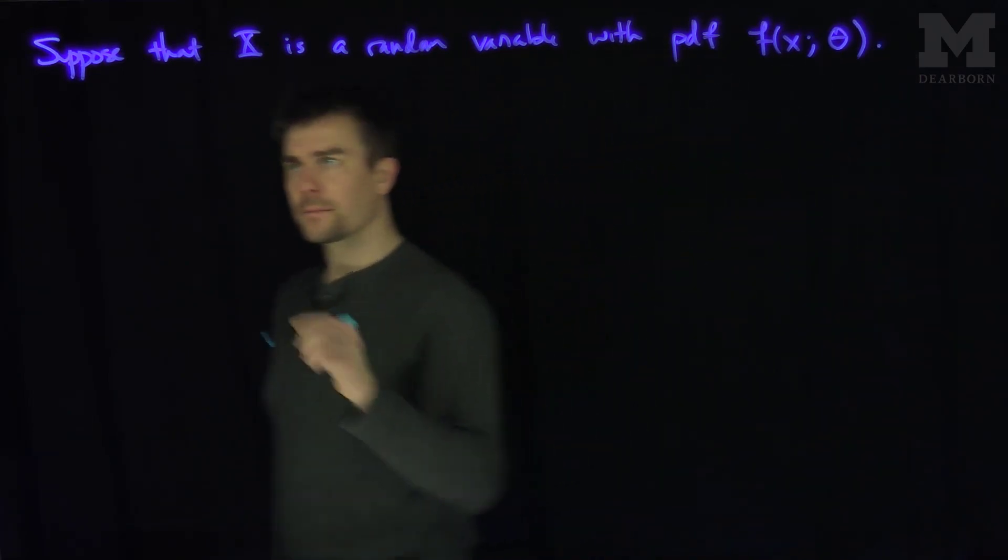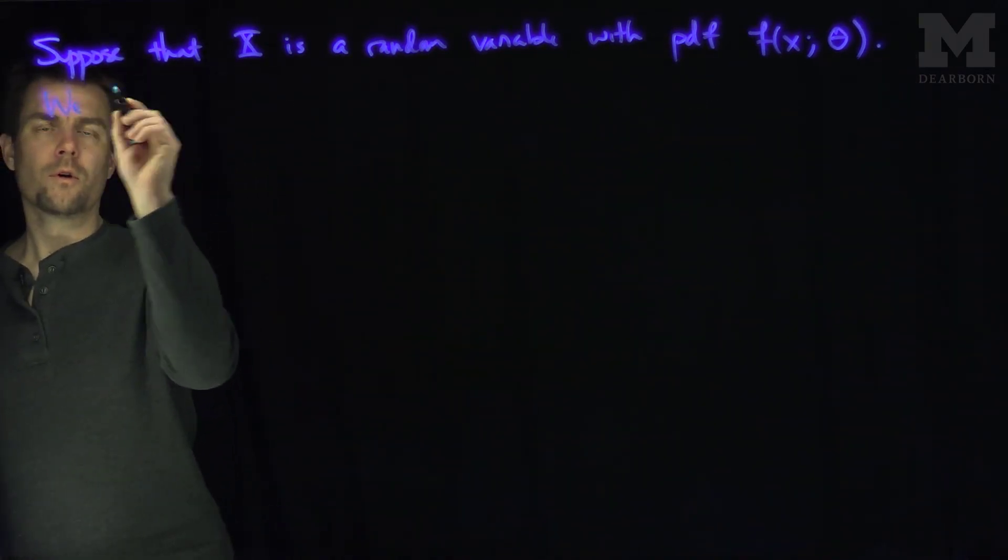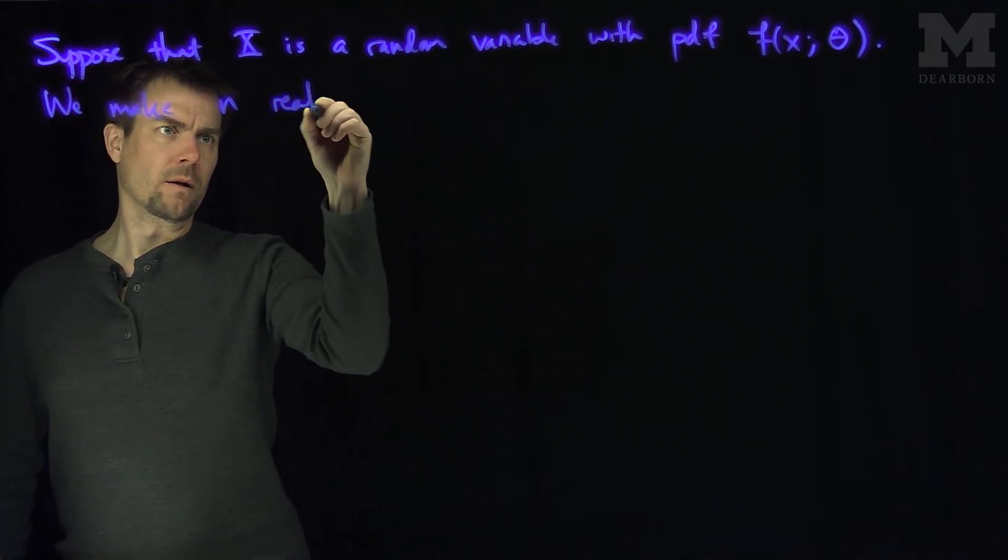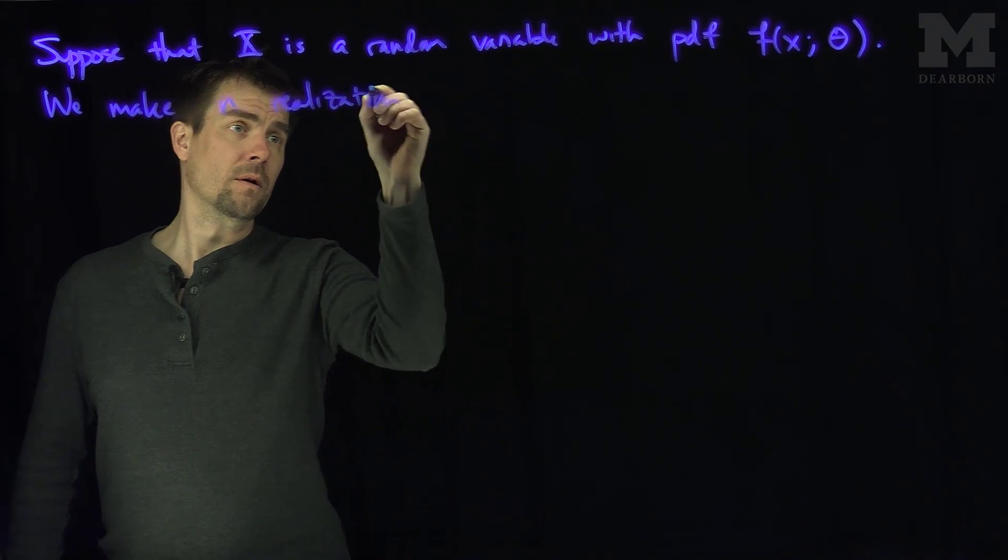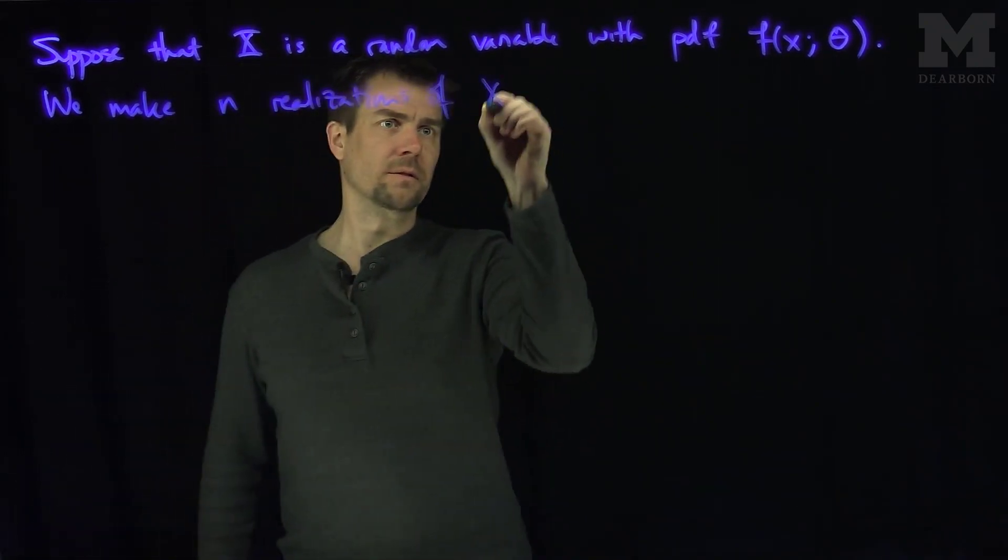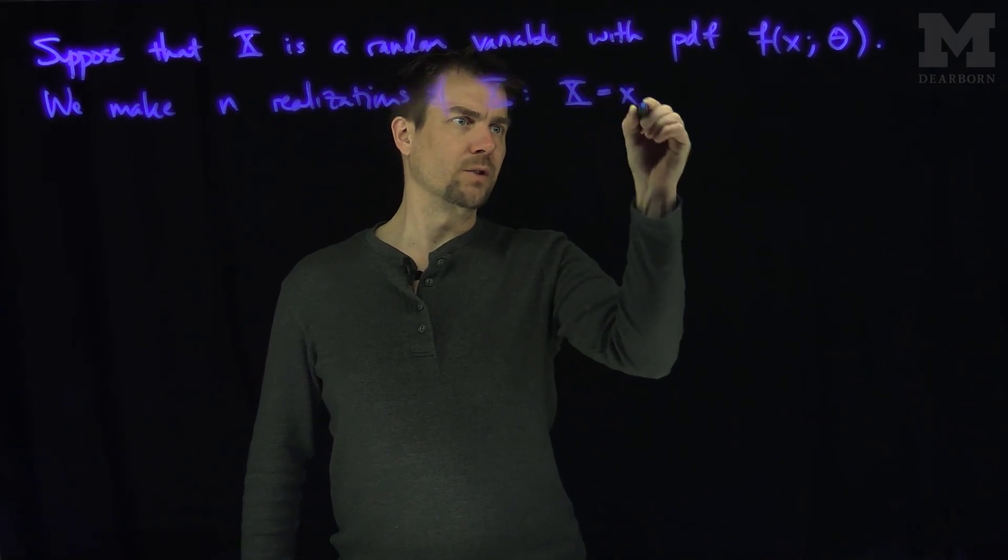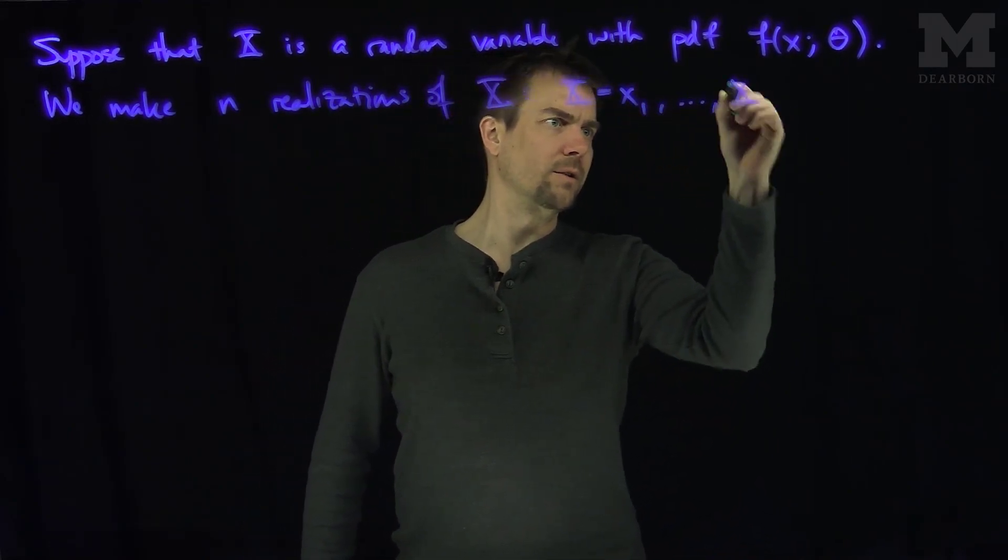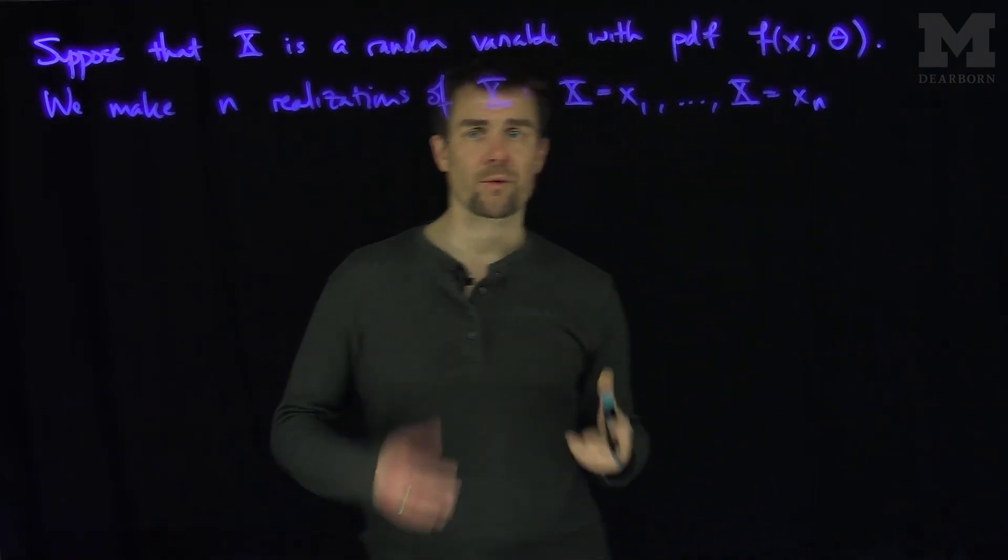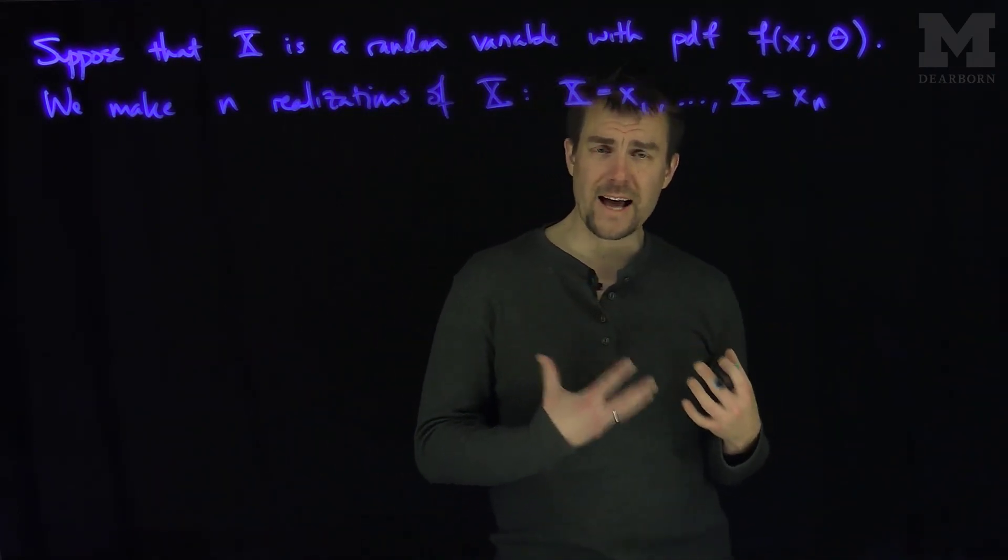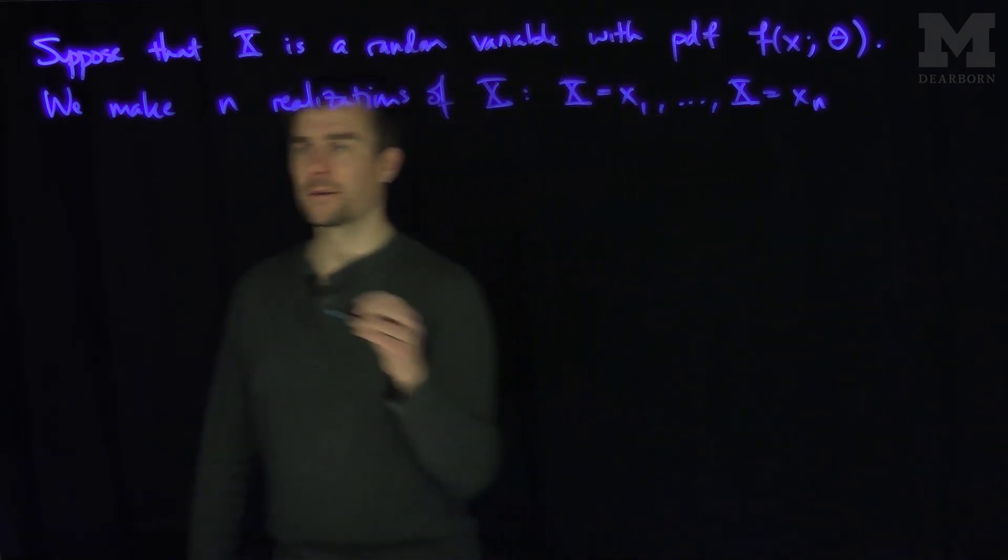We make n realizations of x: x1 through xn. We realize the random variable n times, and my objective now is to use these observations x1 through xn to estimate my parameter theta.